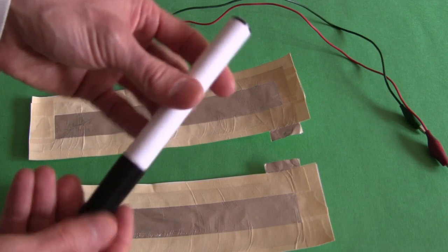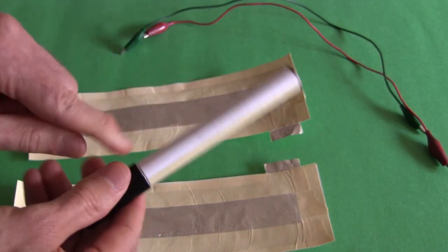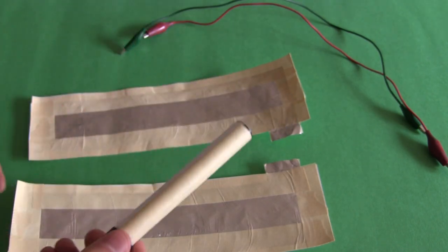Then get a cylinder or dowel or whatever you have. In this case I've taken an old marker, and if it's metal like this one is, then cover it in paper and tape, just insulate it.